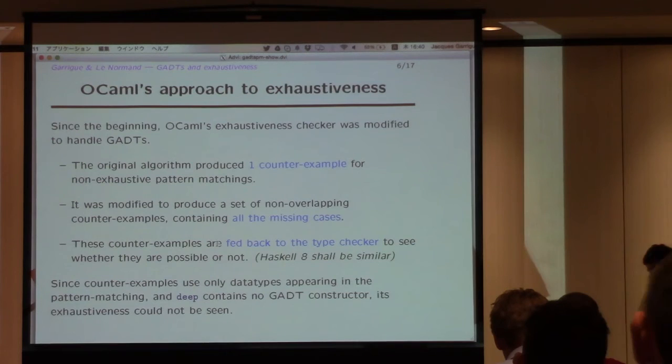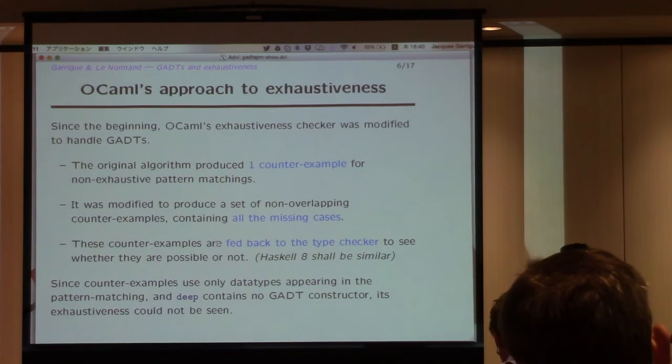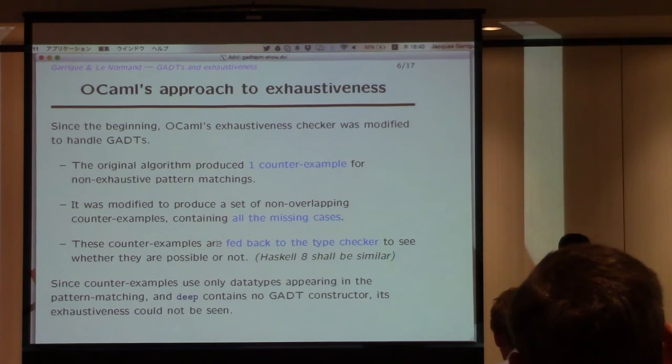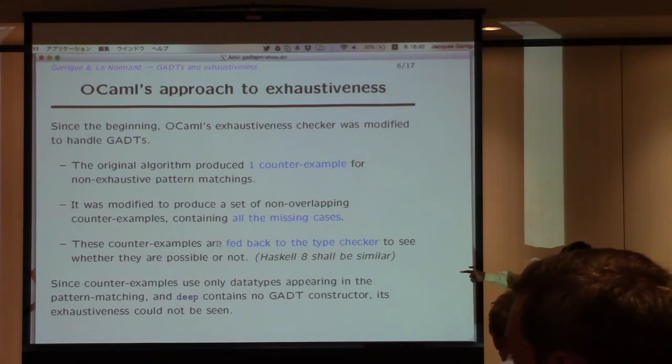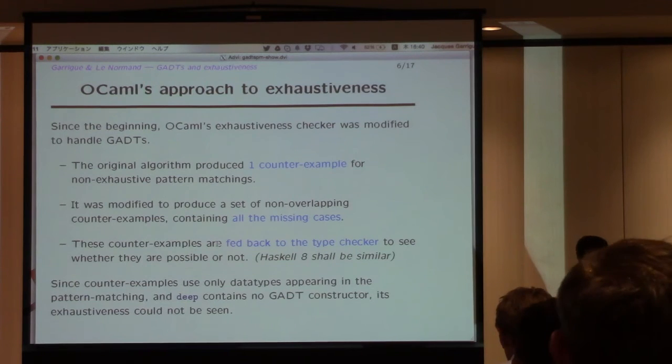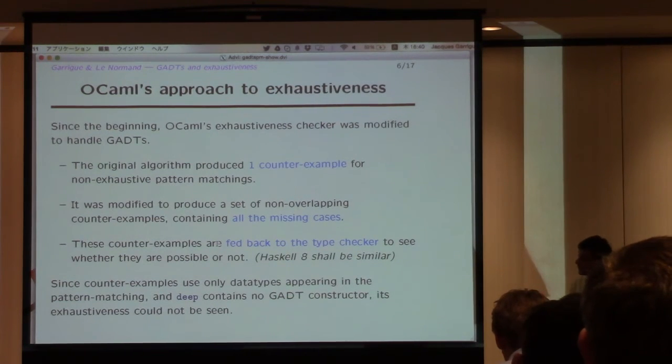And so, but what happens then, I told you how the exhaustiveness detection works usually, it looks at all the constructors which are in your different cases, and from this, it starts generating the other cases. But then it means that in the case of the deep case, actually, I had only none, so there are no GADT constructors around at all. So you cannot hope that it would work.